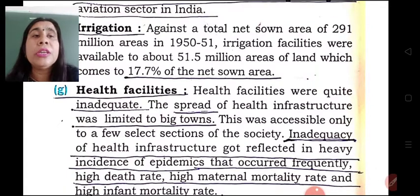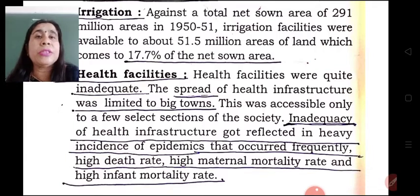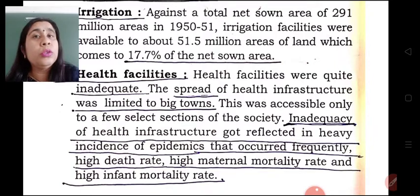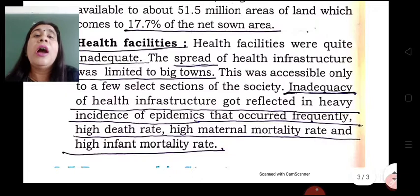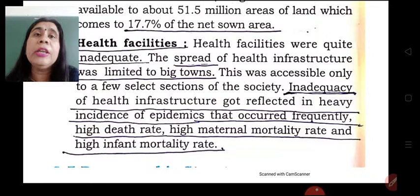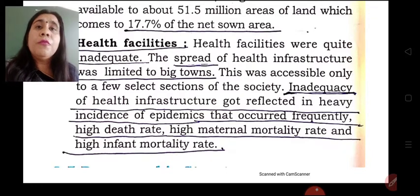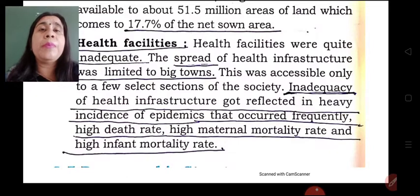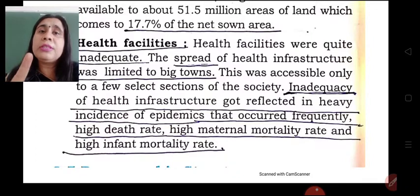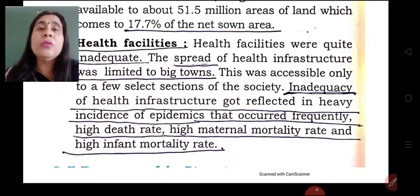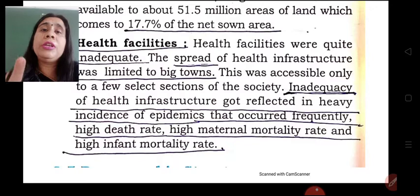Health facilities were also quite inadequate and were spread only to big towns. Therefore, rural areas were lacking the facilities of health infrastructure. Due to this inadequacy of health infrastructure, epidemics spread frequently, and high death rates were taking place — there was high birth rate, high mortality rate, high infant mortality rate, and high maternal mortality rate. The health infrastructure was not in good condition, which led to deaths of maximum people. Maternal mortality rate refers to females dying at the time of giving birth, and infant mortality rate refers to the number of children who die below the age of 1 year. Death rate, infant mortality rate, and maternal mortality rate were all high because of lacking health infrastructure.